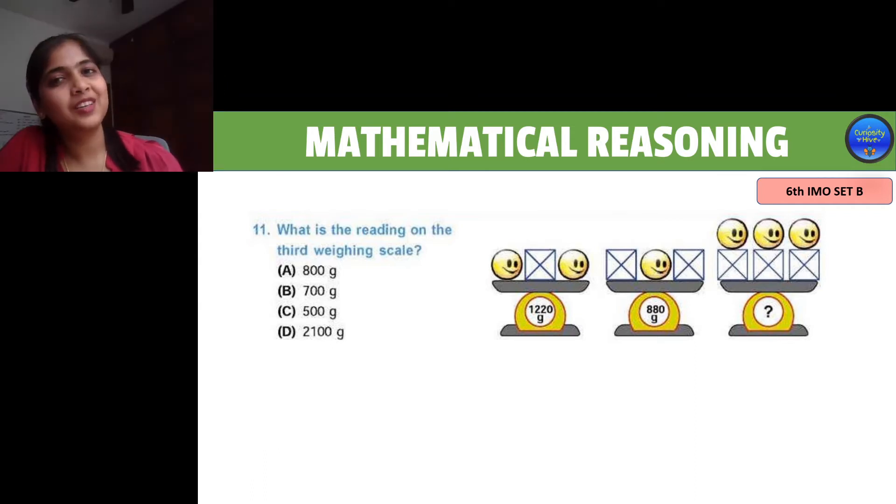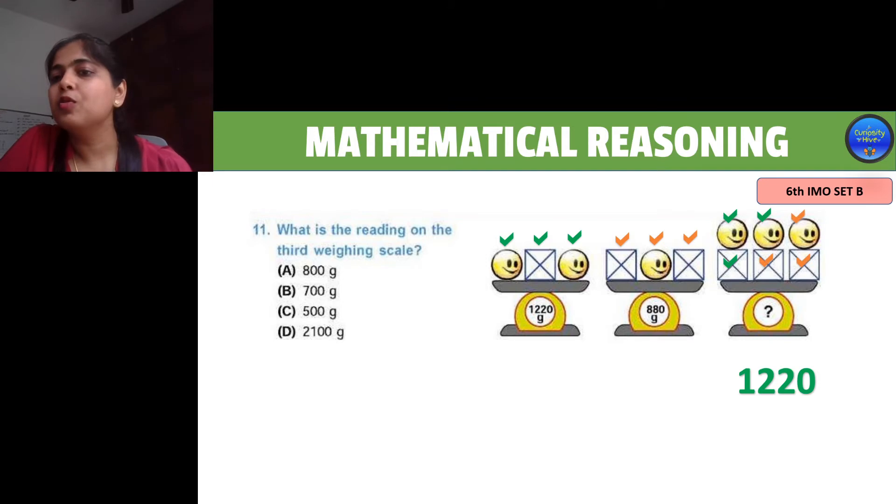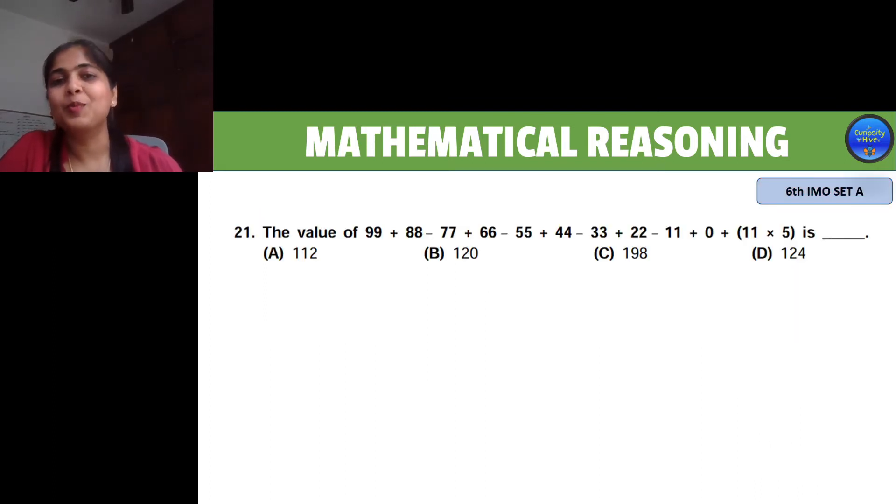I hope you have caught the trick here. If you look at the first balance, it has two smileys and one box which is 1220 grams. In the balance we need to find, we can match up two smileys and one box. Hence we know this contains 1220 plus some more weight. The second balance has 880 grams for two boxes and one smiley. If we add 880 to it, we get the final balance weight. The total weight is 1220 plus 880, which equals 2100.